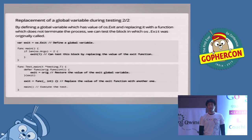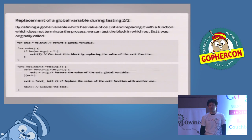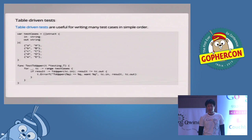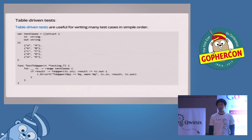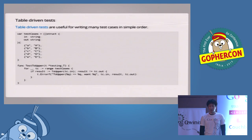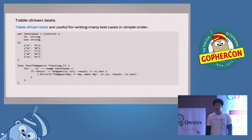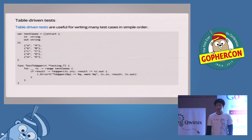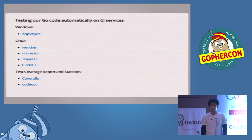Table-driven tests are useful when we have to test many cases. First, we define a slice of test cases. Each case has the input data and the expected result data. In the testing code, we can test each case by looping through the slice of test cases. This method makes our testing code simple, readable, and very maintainable. There are many CI services which can test Go code. AppVeyor is useful because it can test Go code in a Windows environment, while other services do so in a Linux environment. And there are test coverage reporting services such as Coveralls and CodeClimate. I usually use AppVeyor, Travis CI, and Coveralls.